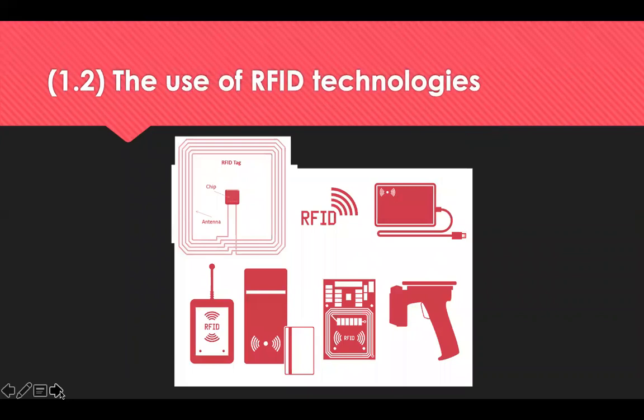RFID — Radio Frequency Identification — refers to technology where digital data is encoded in an RFID tag which is captured by a reader via radio waves. RFID is similar to barcodes in that data from the tag is captured by a device that stores it in a database. However, the most notable advantage is that an RFID tag can be read outside the line of sight, whereas barcodes must be aligned with an optical scanner. RFID belongs to a group of technologies called Automatic Identification and Data Capture, which automatically identify objects, collect data about them and enter those data directly into a computer with little or no human intervention.